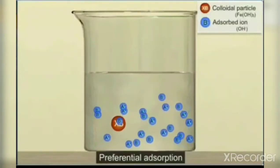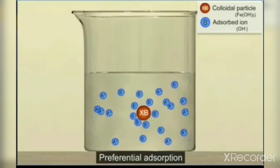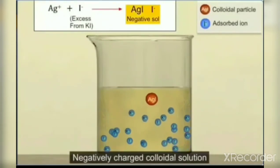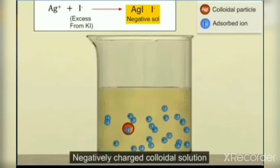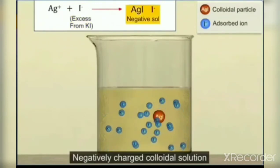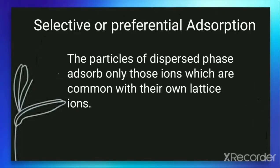Let us see a demonstration. Let XB be a particle and B is common in the solution, so B starts to get adsorbed on its surface. Similarly, when AgNO₃ is added to excess KI, AgI is formed and the common ion present in solution is I⁻, so I⁻ starts to get adsorbed on it to form a negatively charged sol. We can conclude that the dispersed phase particles adsorb only those ions which are common with their own lattice ions.